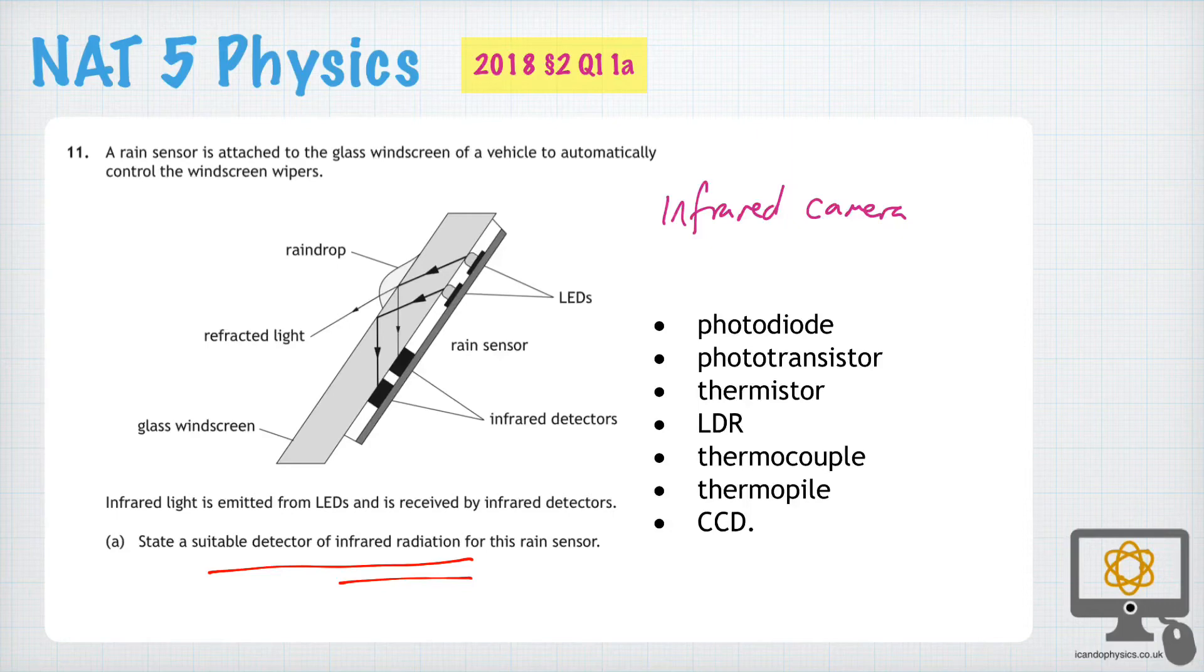Another common one that people may have written would have been photographic film. Now, the problem with photographic film is that this device is having to use the information to turn on the wipers. And there's no electronic systems in photographic film. So you need something that would actually output a voltage.